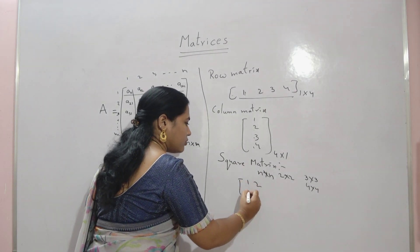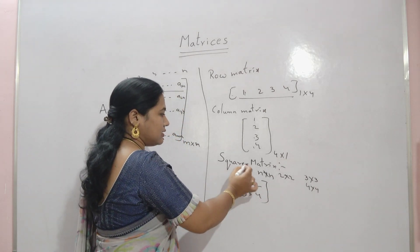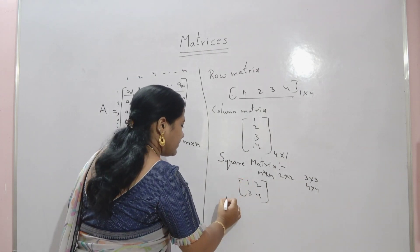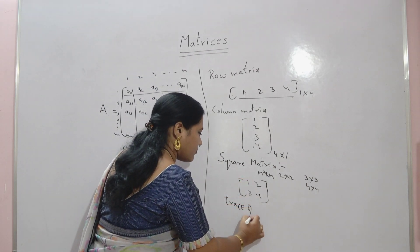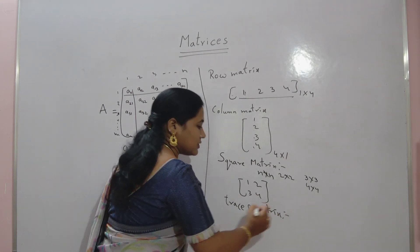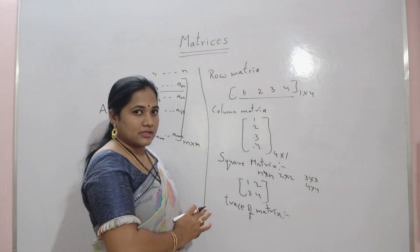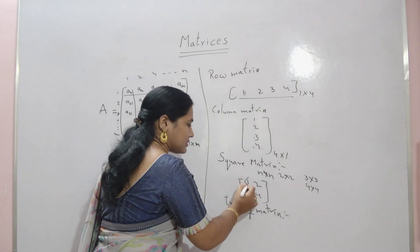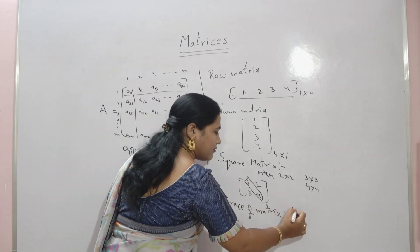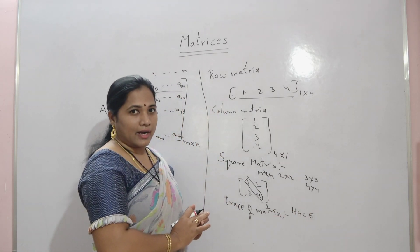For example, the matrix [1, 2, 3, 4]. An important term in the square matrix is the trace of the matrix. The trace of the matrix is defined as the sum of the diagonal elements. Here, the leading diagonal is 1 and 4, so the sum 1 plus 4 equals 5. That is the trace of the matrix.